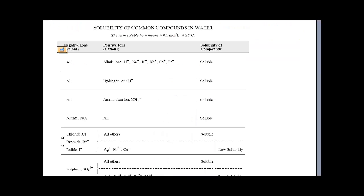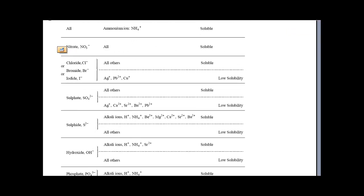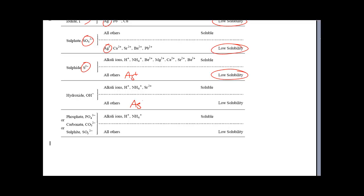Because we have a solubility table, we know which ions will form a precipitate with each one of these. If you look at your solubility table — press pause, take it out — you can see that Ag+ forms a precipitate with low solubility with SO4, with S, and several other ions. There are a lot of ions that can form a precipitate with Ag+.